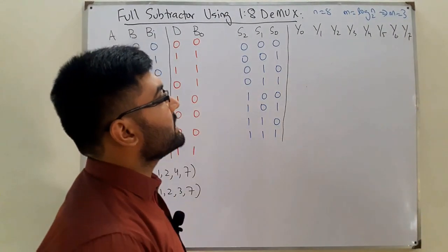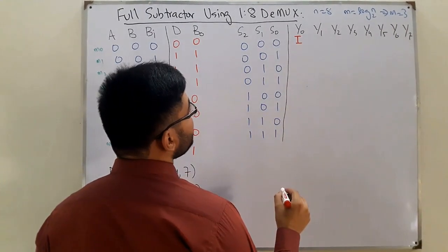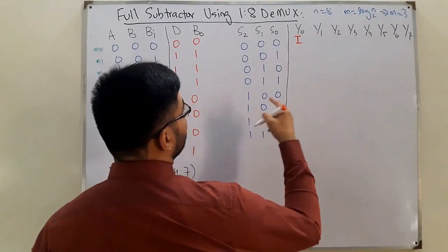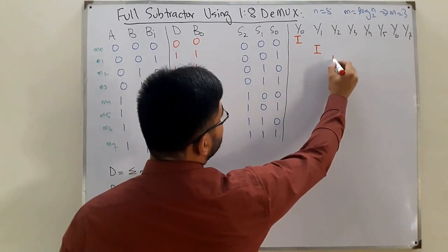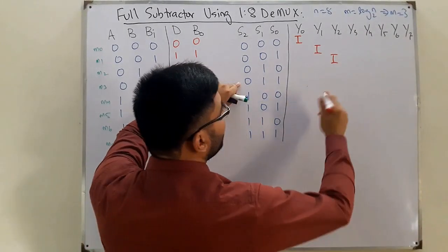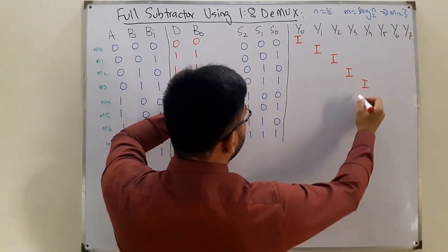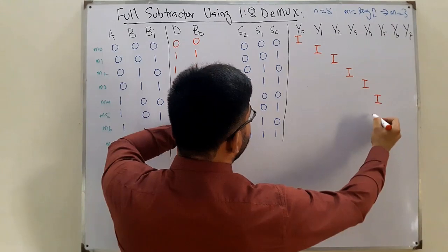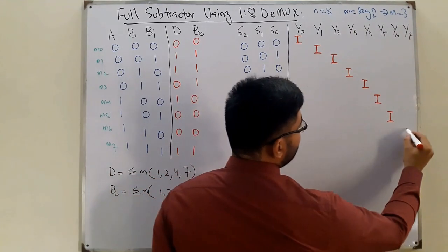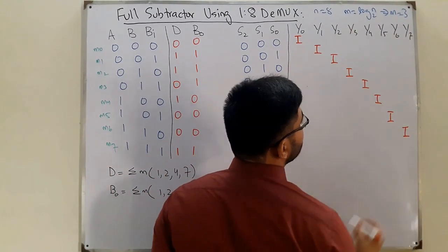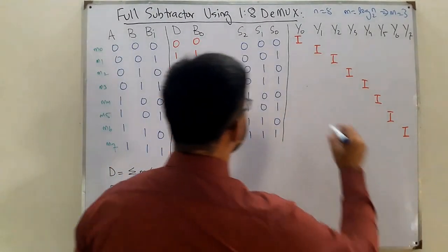When all select lines are zero, the input is directed to output Y0. With S0 as 1 and the rest zero, it goes to Y1. For 010 we get Y2, for 011 we get Y3, for 100 we get Y4, for 101 we get Y5, for 110 we get Y6, and 111 gives Y7.